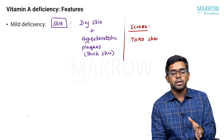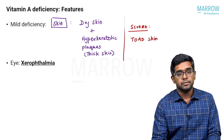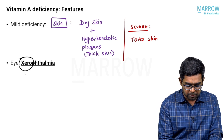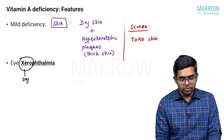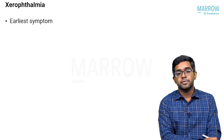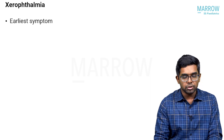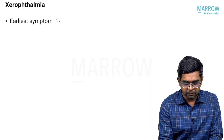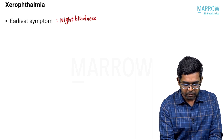The next important area is the eye changes in the form of xerophthalmia. Xerosis means dryness and ophthalmia refers to the eye, so it is a dry eye condition. The earliest symptom of xerophthalmia is defective dark adaptation, which results in night blindness, since vitamin A is very much needed for dark adaptation.